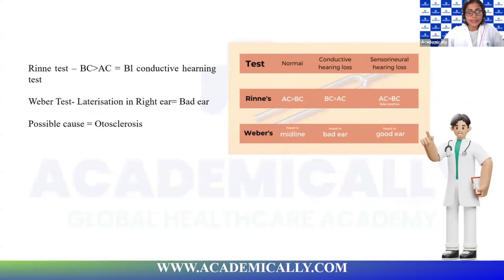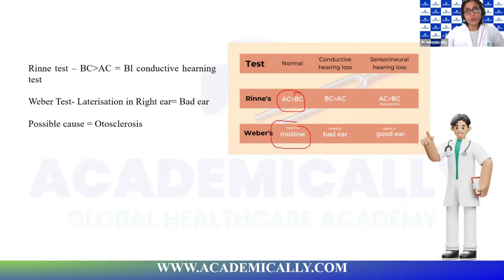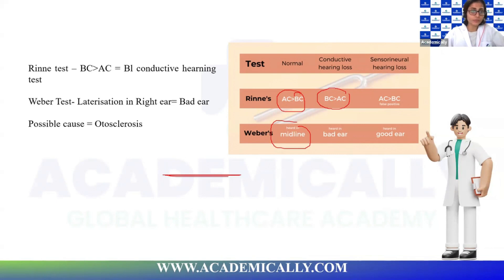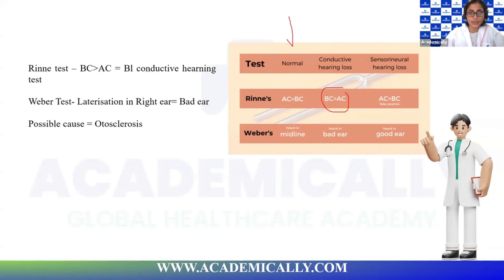Let's figure out whether this is conductive or sensorineural. In a normal scenario, Rinne's shows air conduction greater than bone conduction, and Weber should be midline — that is why we do both tests together and not just one. In sensorineural hearing loss, air conduction is still better than bone conduction, which is a false positive result. Bone conduction greater than air conduction has only one interpretation: conductive hearing loss.